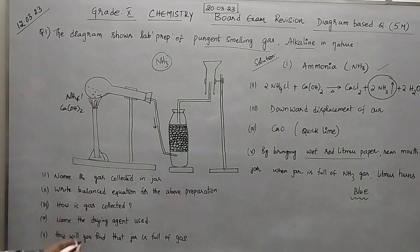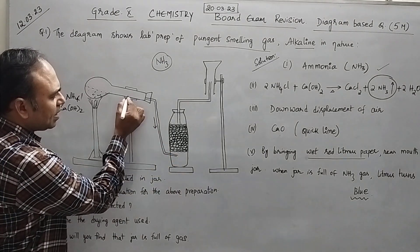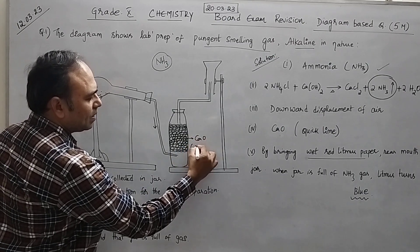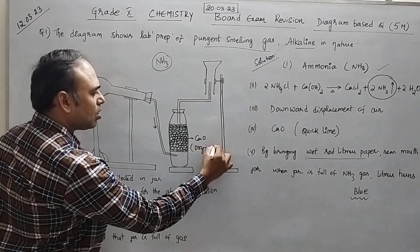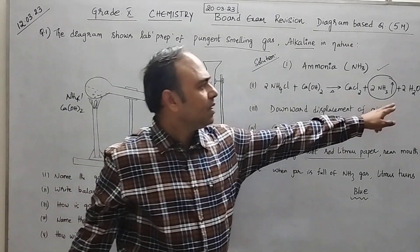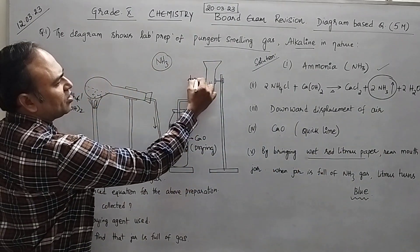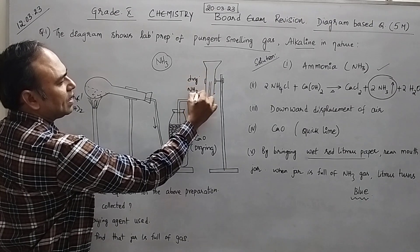Third one. How is this gas collected? You can observe that the gas will pass through this. This one is calcium oxide for a drying purpose. If at all the moisture is present here it should not pass through this. So only dry NH3 gas should be collected here.